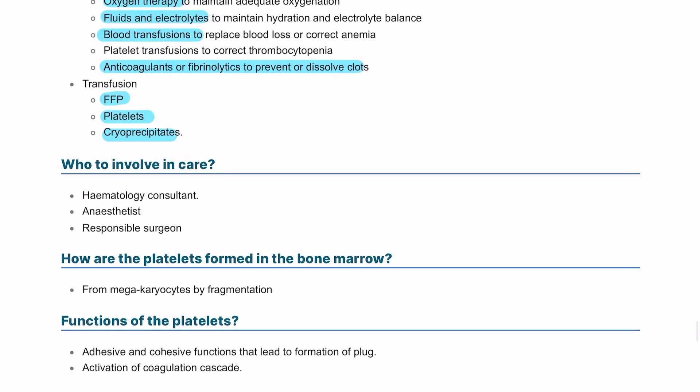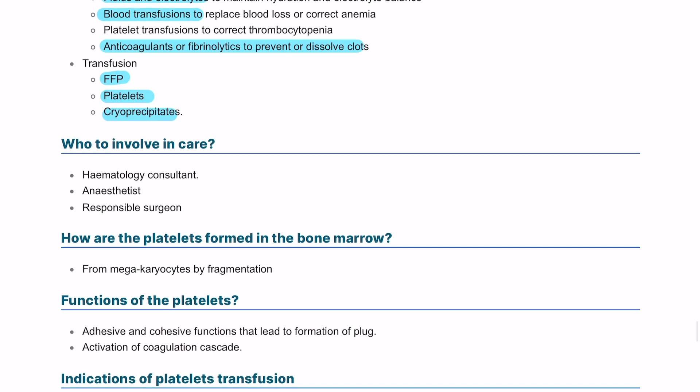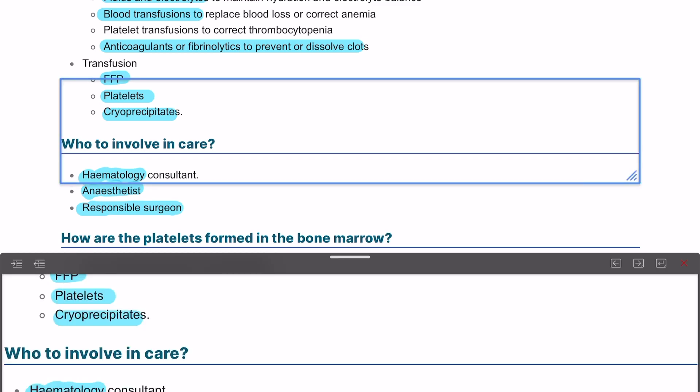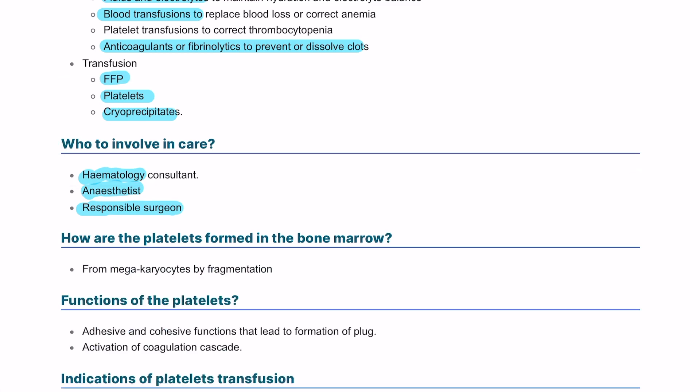Who to involve in the care? We need to get a hematology consultant. If they go into surgery, we need an anesthetist and the responsible surgeon. Platelets are formed in the bone marrow by megakaryocytes through a fragmentation process.